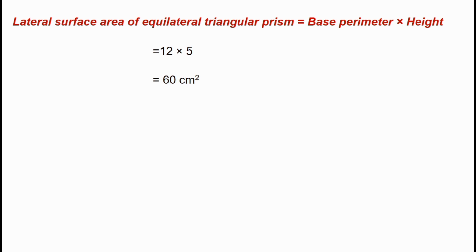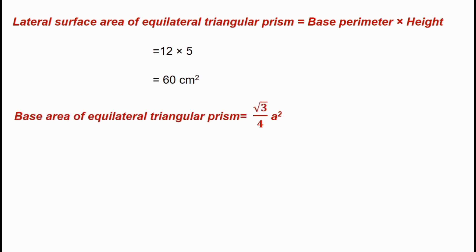Now, base area is equal to the area of an equilateral triangle. The area of an equilateral triangle is equal to root 3 by 4 times a squared. The side a is equal to 4 cm, so we substitute: root 3 times 4 squared divided by 4.